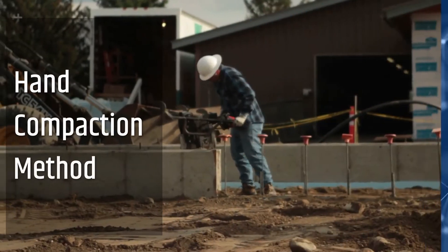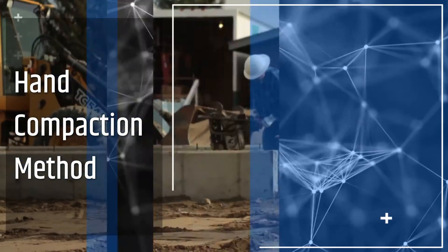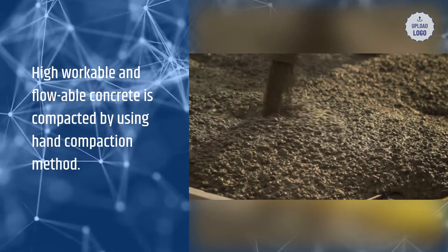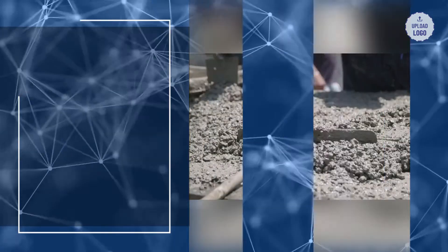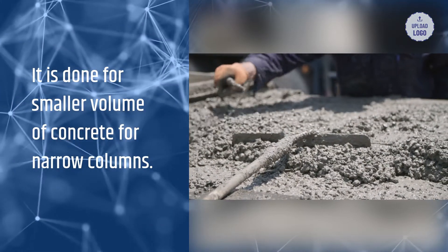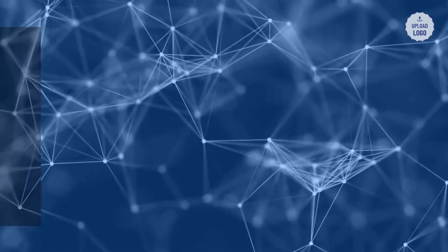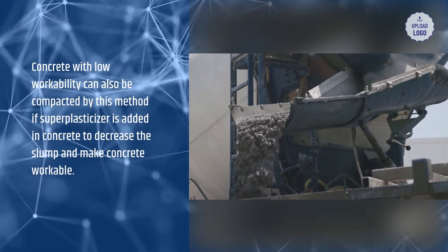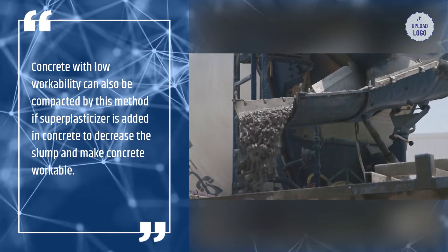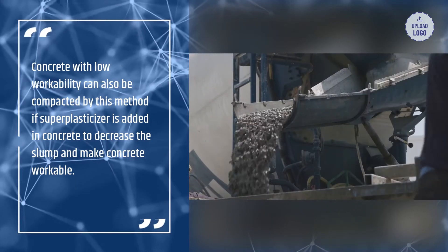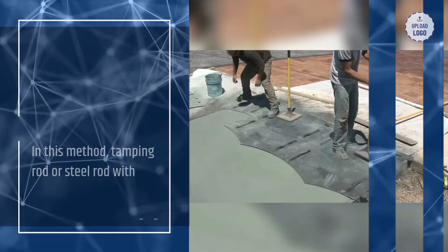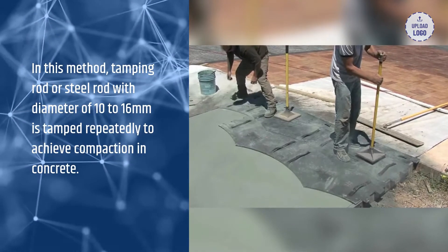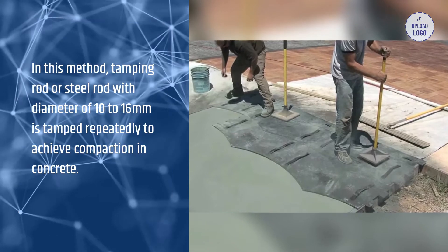Hand compaction method: High workable and flowable concrete is compacted using the hand compaction method. It is done for smaller volumes of concrete and for narrow columns. Concrete with low workability can also be compacted by this method if a superplasticizer is added to decrease the slump and make concrete workable. In this method, a tamping rod or steel rod with diameter of 10 to 16 mm is tamped repeatedly to achieve compaction.